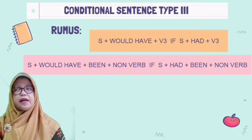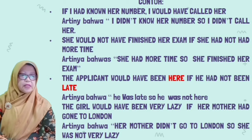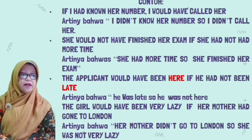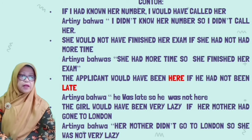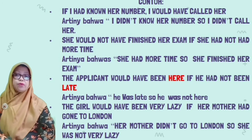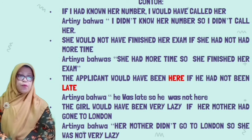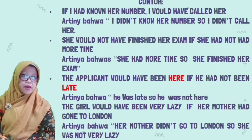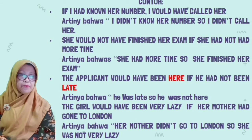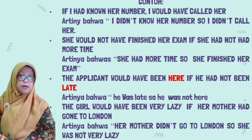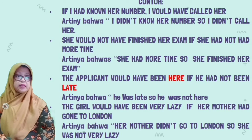Contoh kalimat pengandaian tipe ketiga. Contoh pertama: 'If I had known her number, I would have called her' — Jika saya telah tahu nomornya, saya telah akan menghubunginya. Tapi kenyataannya, saya tidak tahu nomornya, maka saya tidak menghubunginya. Yang kedua: 'She would not have finished her exam if she had not had more time.' Kenyataannya, dia belum menyelesaikan ujiannya karena dia tidak punya waktu.